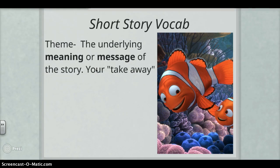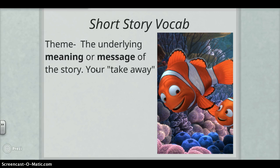The last element we have is theme, which is going to be the underlying meaning or message of the story — your takeaway. What are you taking away from the story? What are you learning? This can be a confusing element because it often gets confused with the topic or the plot of the story. A theme gives us a meaning or a message; it's not just going to tell us what happens in the story or what the story is about. With Finding Nemo, an example of a theme could be family, or love and devotion and hope, because Marlin never gave up hope when he was searching for his son and was fueled by love to find him.